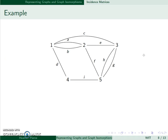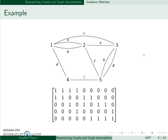For example, I have every row that represents my vertices: one, two, three, four, five. The columns represent my edges: A, B, C, D, E, F, G, H, and I.